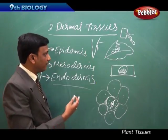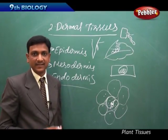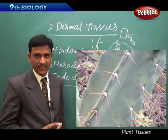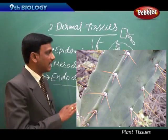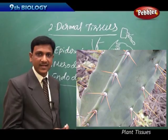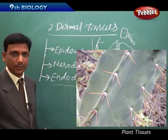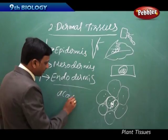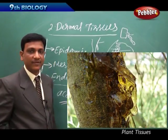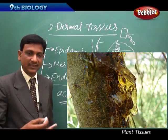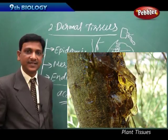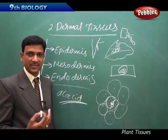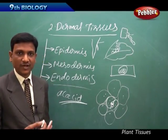Epidermal cells show various modifications for protection. In desert plants, the leaves are very thick. On the surface of a cactus, there is a thick, waxy coating that protects the plant. On stems like those of acacia — a tree from which gum is obtained — a gum-like substance is released from the epidermis, also for protection. These modifications of epidermal cells all serve the purpose of protecting the plant.